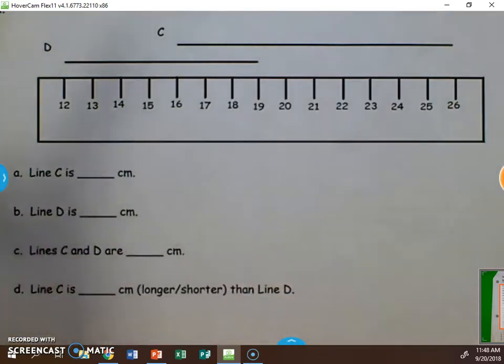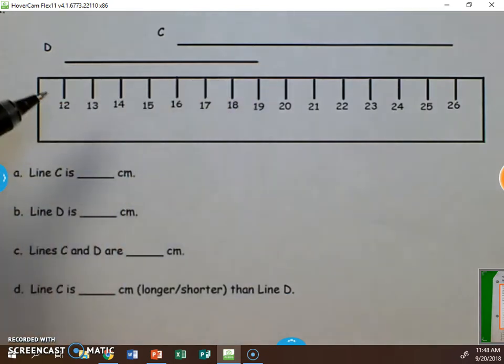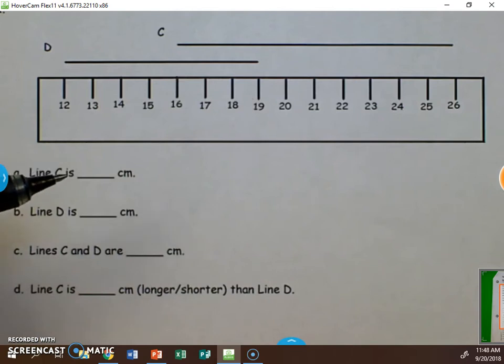So we tell the kids to look at the start of your line. Like D starts at 12 and it ends at 19. We want to start at 12 and count up to 19 to find out how many centimeters long that line would be.